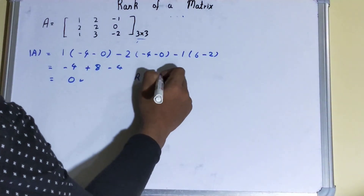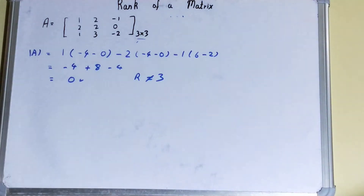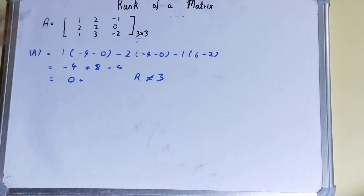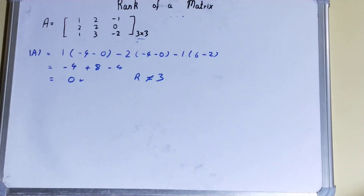So the determinant is zero, and we can clearly say the rank is not equal to 3 — it is less than 3. In this situation, we pick any 2×2 submatrix from the original matrix and try to find its determinant.